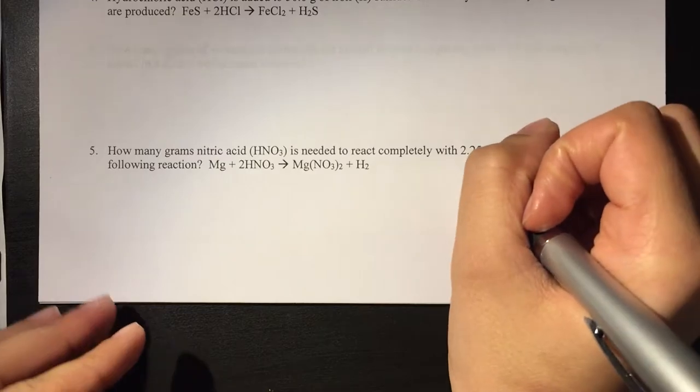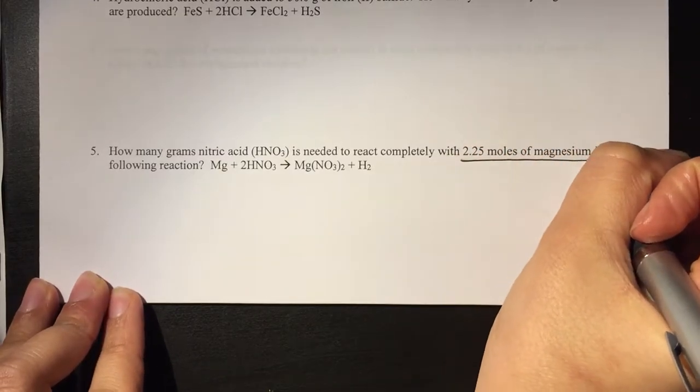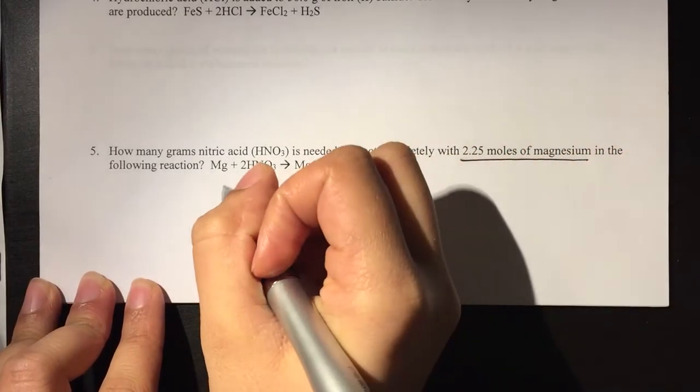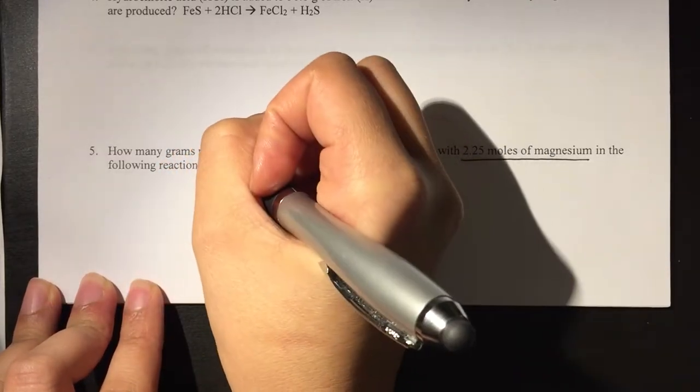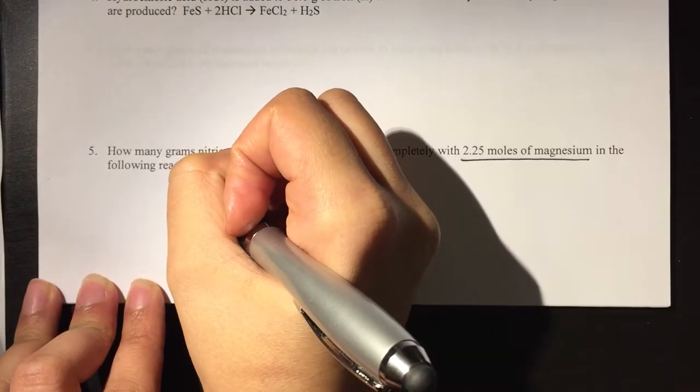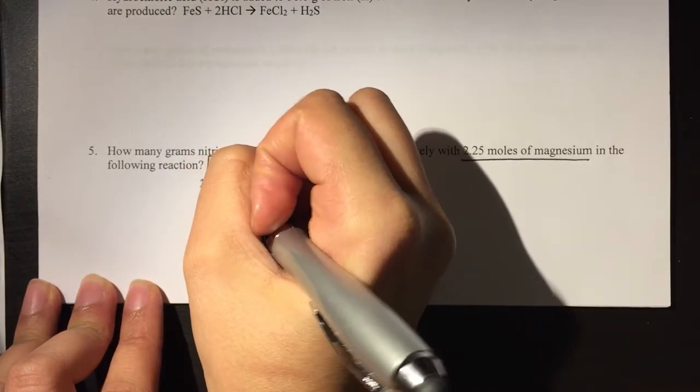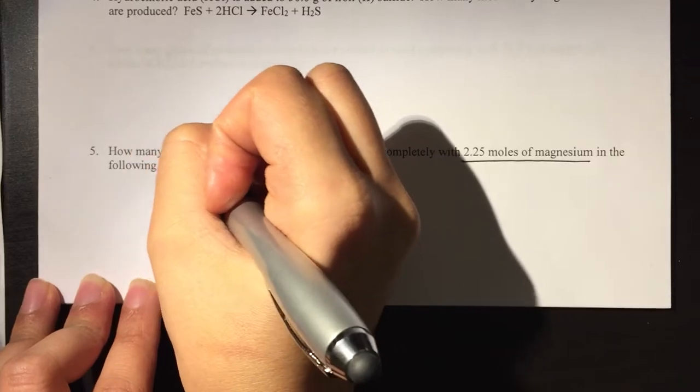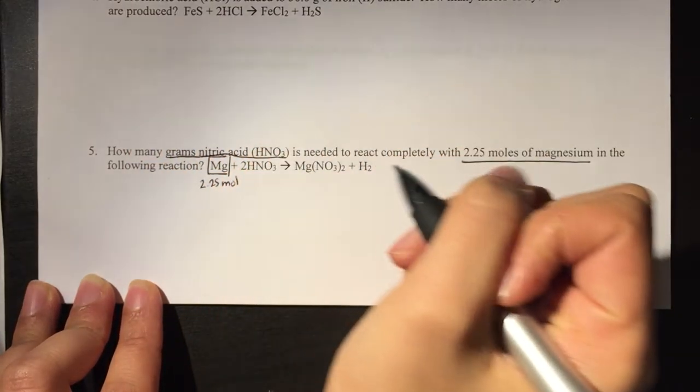If we look at what we started with, we're starting with 2 moles of magnesium. So I'm going to go over to my balanced equation, I'm going to put a box around where I'm starting, I'm going to put 2.25 moles, and then what I'm trying to solve for is grams of nitric acid.